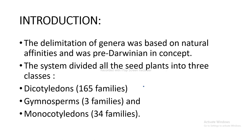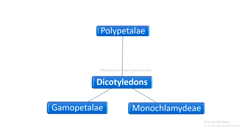The delimitation of genera was based on natural affinities and was pre-Darwinian in concept. The system divided all the seeded plants into three classes: the first class is Dicotyledons, which includes about 165 families; second is Gymnosperms, which includes three families; and the third is Monocotyledons, which includes about 34 families. Dicotyledons are further divided into the subclasses Polypetalae, Gamopetalae, and Monochlamydeae.